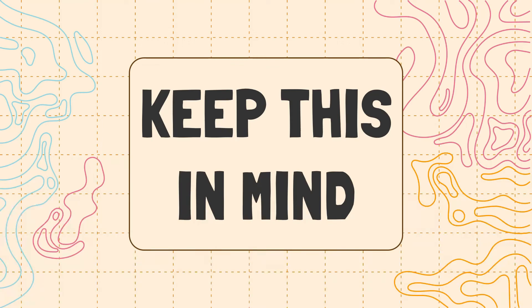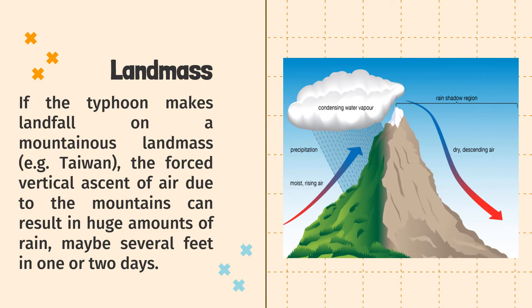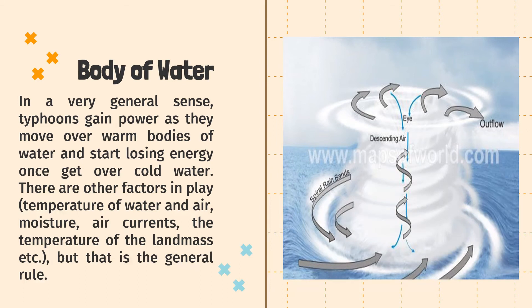Keep this in mind. If a typhoon makes landfall on a mountainous landmass, e.g. Taiwan, the forced vertical ascent of air due to the mountains can result in a huge amount of rain — maybe several feet in one or two days. In a very general sense, typhoons gain power as they move over warm bodies of water and start losing energy once they get over cold water. Other factors in play include the temperature of water and air, moisture, air currents, and the temperature of the landmass, but that is the general rule.